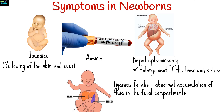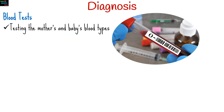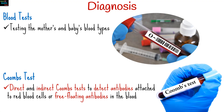Diagnosis involves testing the mother's and baby's blood types, as well as direct and indirect Coombs tests to detect antibodies attached to red blood cells or free-floating antibodies in the blood.